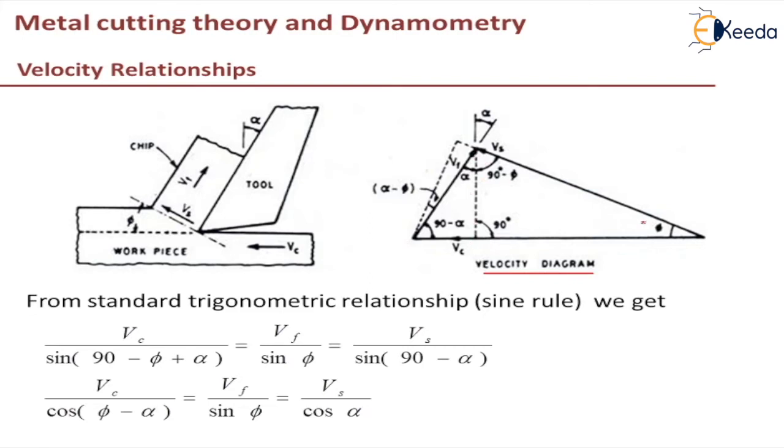This angle is 90 and this is the shear angle phi and this is the rake angle alpha. As this is alpha, this is 90 minus alpha and this is 90. As this is 90 and this is phi, this angle is 90 minus phi.